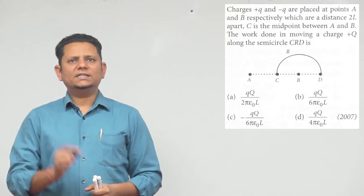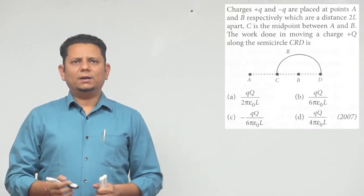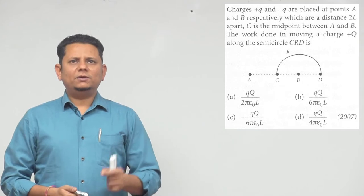Next question. Question 27 says charges +q and -q are placed at points A and B respectively which are at a distance of 2L apart. C is the midpoint between A and B.